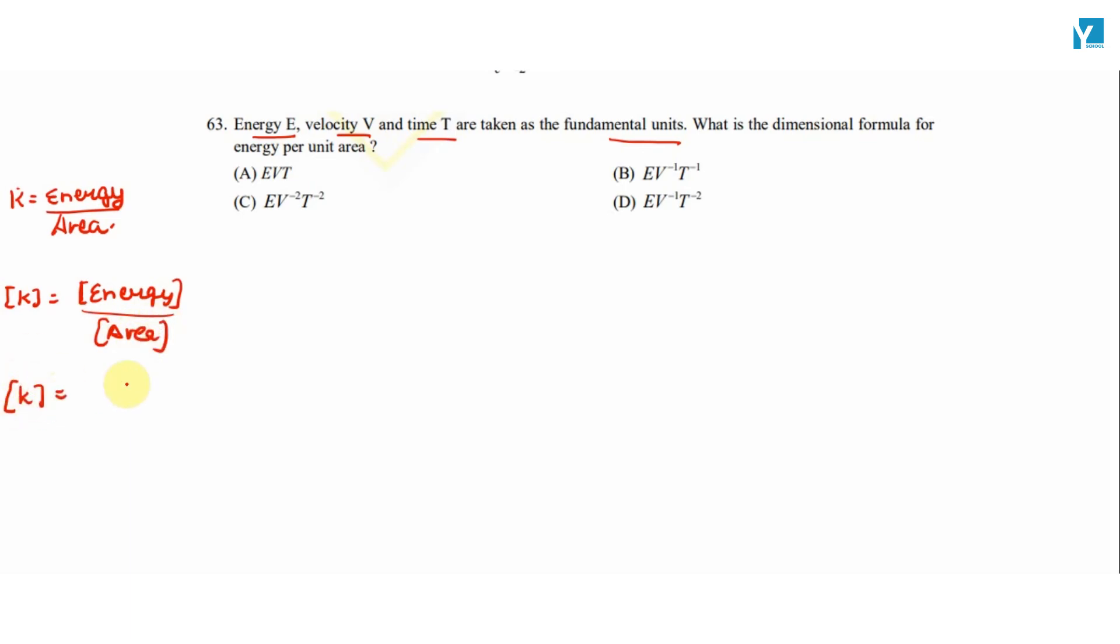K ki dimension standard units me kya hoi? Energy is M1 L2 T-2 and area is L2. So k ki dimension hai, MLT ki form me M1 and T-2.